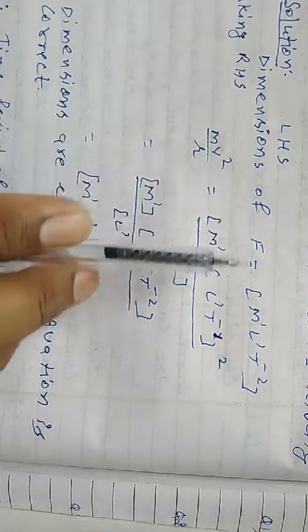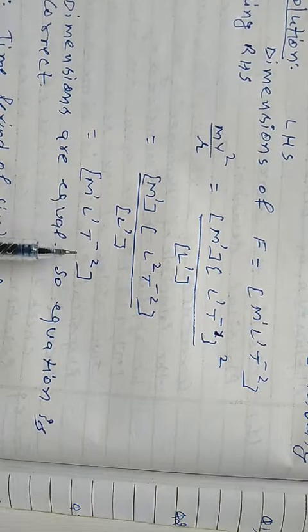Dimensions of left hand side m¹l¹t⁻². Dimensions of right hand side is m¹l¹t⁻². Therefore equation is correct.